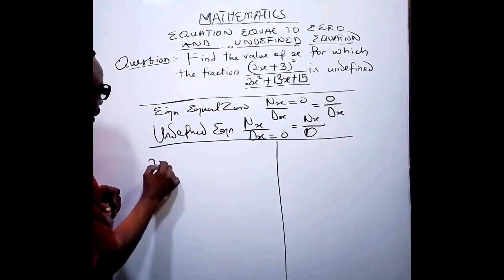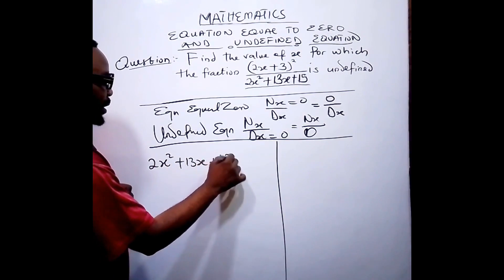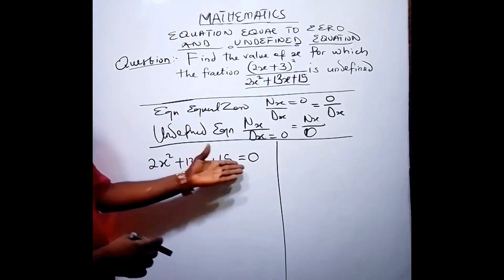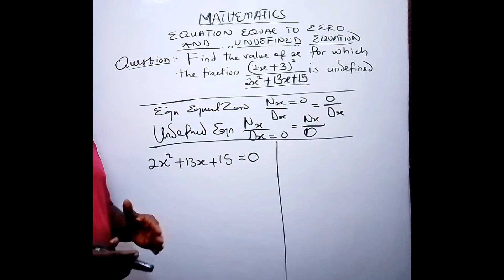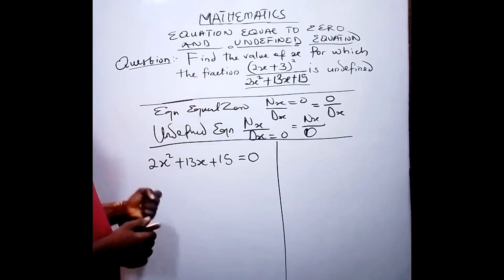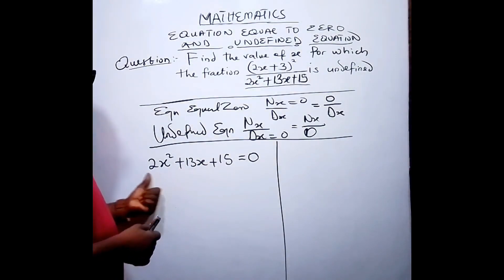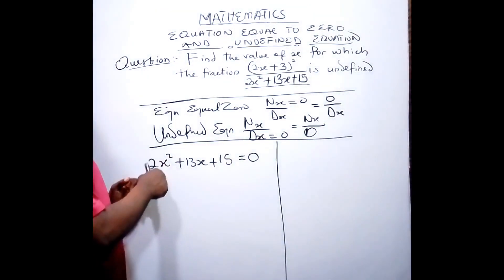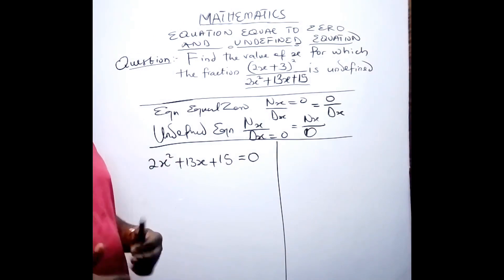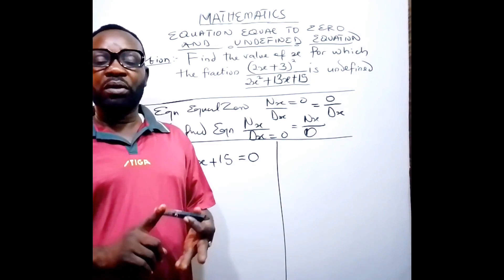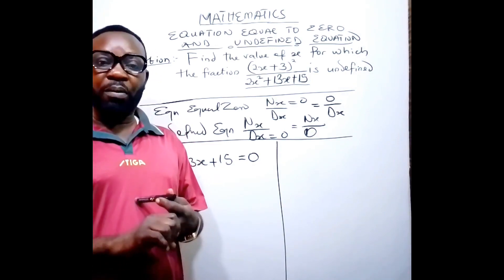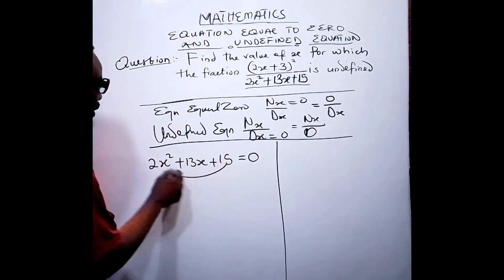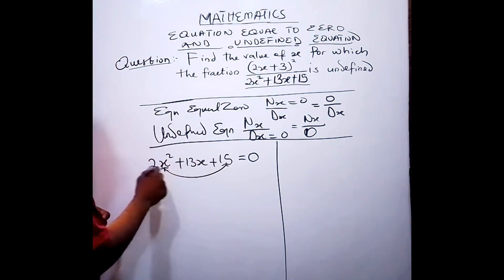So we are going to have 2x² + 13x + 15 equal to zero. This means we have equated the denominator to be equal to zero, then we simplify it. This is a quadratic equation because the highest power on the variable x is 2. We have different methods of solving quadratic equations: factorization, completing the square, or the formula method. Here we are going to use the factorization method.